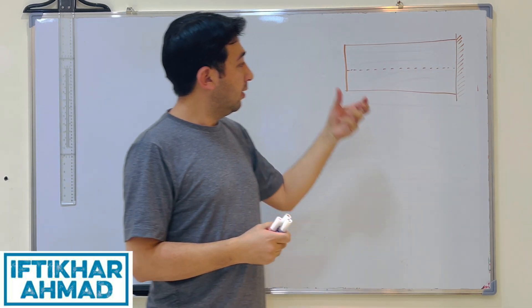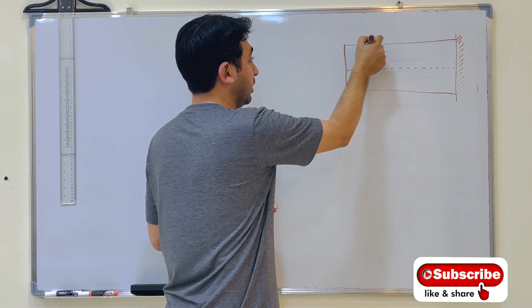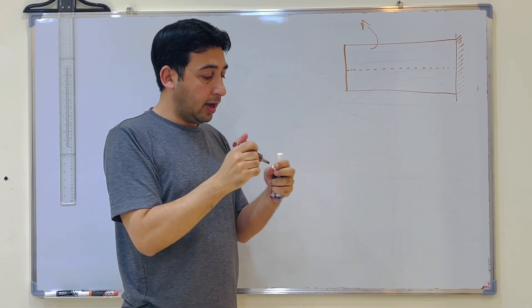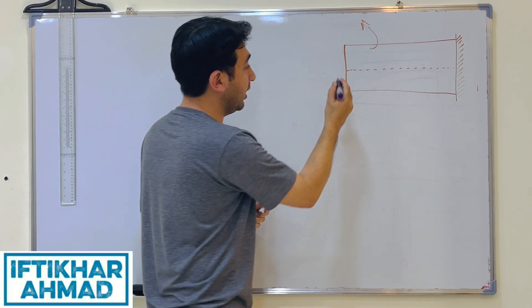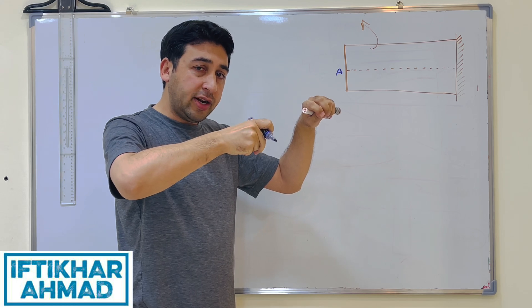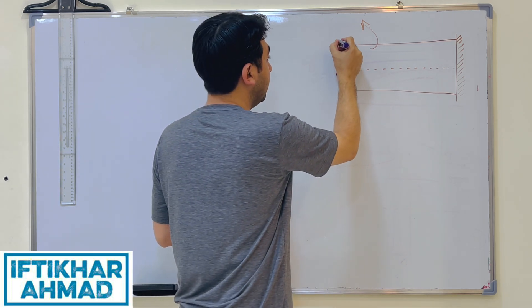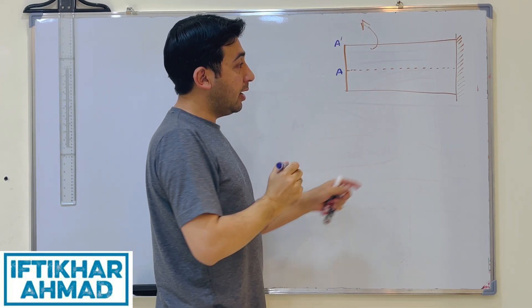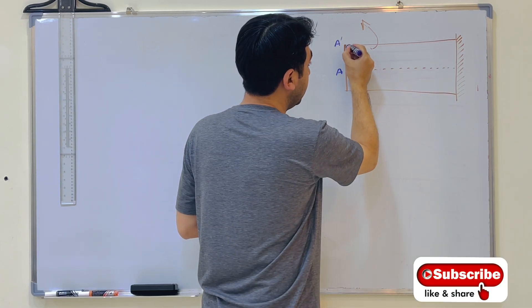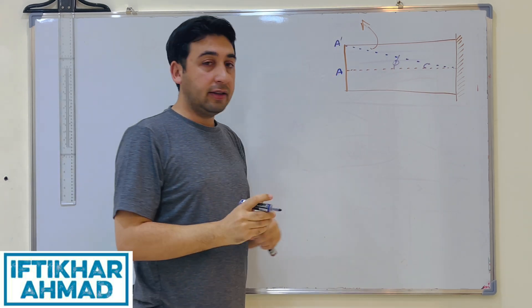We have a shaft that is fixed from one end; from the other end it is free and we are applying a twist in this direction. I will consider a point A on this shaft, and if I twist the shaft, this point A will also be twisted — it will move to some other point, A-dash. Since the shaft is fixed from one end, A to A-dash will travel through this angle, which we represent with phi.